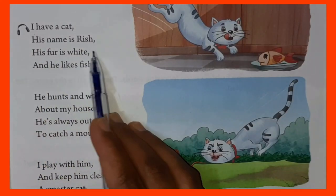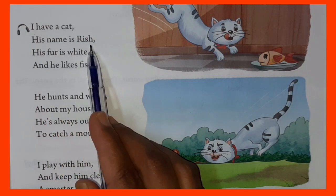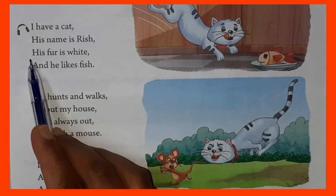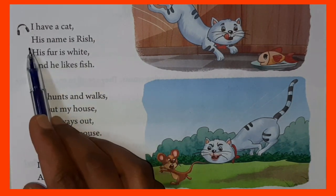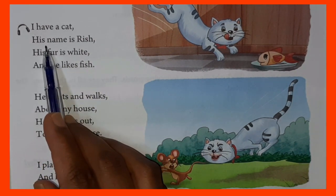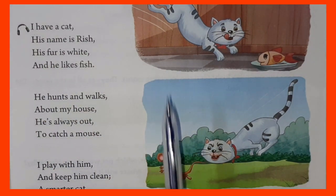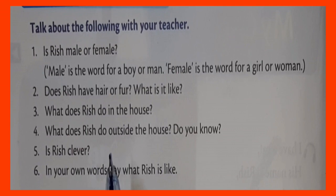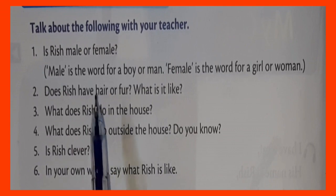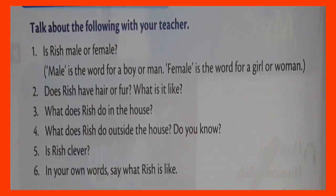See here in this poem: His name is Rish. His fur is white. The word 'his' refers to a boy. So Rish is a boy cat. So we have to write: Rish is male.